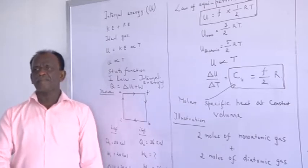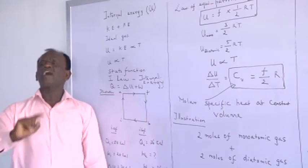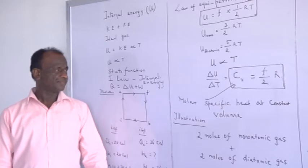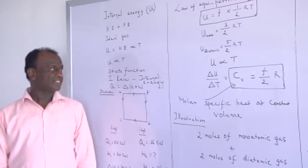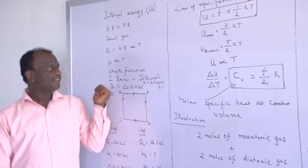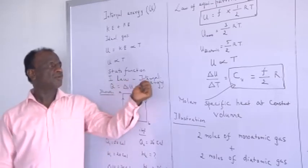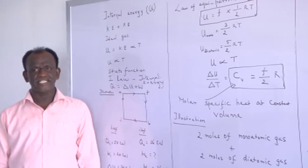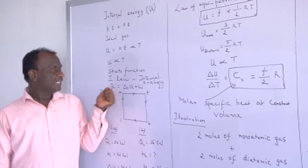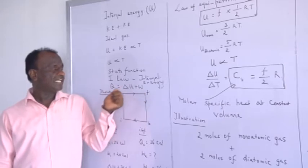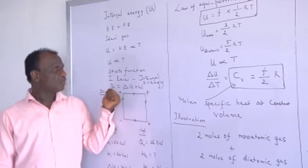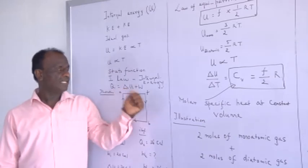The first law of thermodynamics brought about the concept of internal energy. It states a relation among three variables — heat energy Q, work done W, and internal energy — given by the formula Q = ΔU + W.